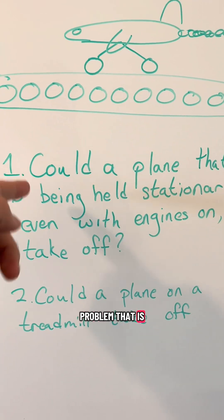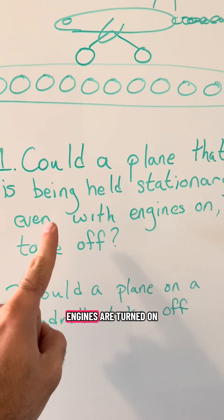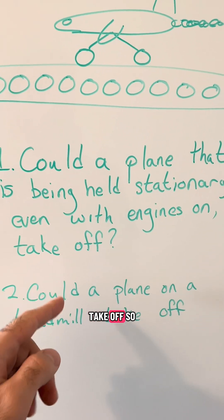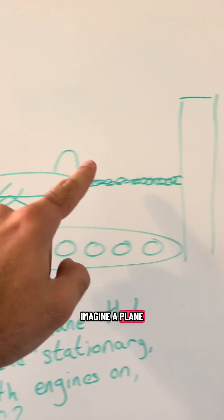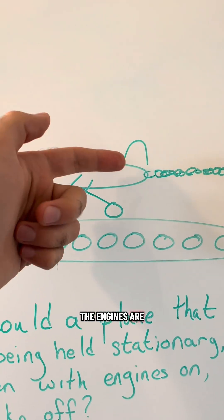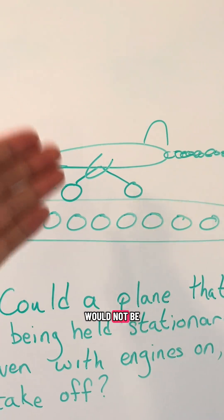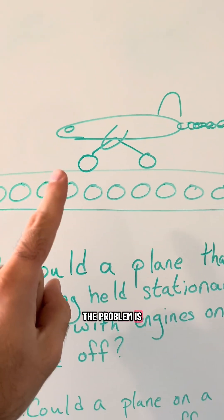It seems that there is one problem being asked: could a plane that is being held stationary, even while its engines are turned up on takeoff? For example, imagine a plane that is chained to a wall that could just hold the plane back. Even though the engines are turned on, the plane can't go anywhere, and in that case the plane would not be able to take off. The problem is the way...